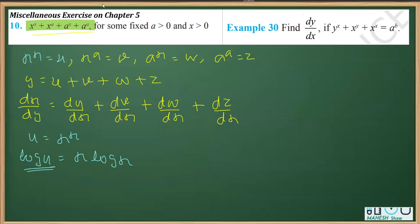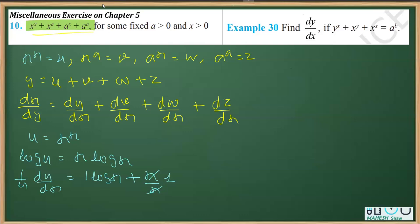Now differentiating both sides with respect to x: (1/u) du/dx. Here I apply the product rule — derivative of x is 1 times log x, plus x copied times derivative of log x which is 1/x, giving 1. Transposing u to the other side: du/dx = x^x (1 + log x). This is equation 1.